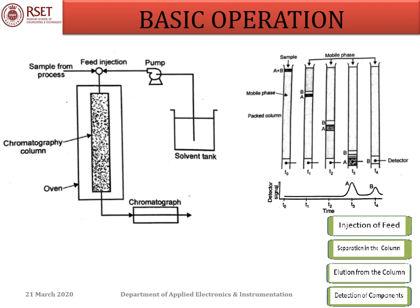Detection of components: The different components are collected as they emerge from the column. A detector analyzes the emerging stream by measuring a property which is related to concentration and characteristics of chemical composition.